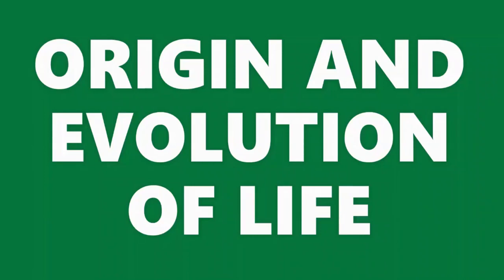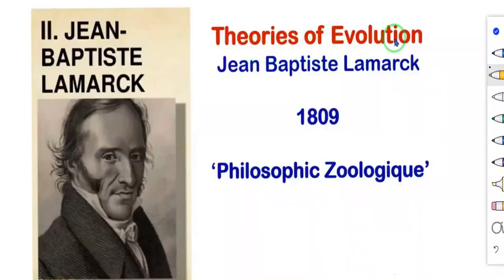Welcome back to zoology class. In the last video we covered the origin and evolution of life. Today we will see the remaining topics. First, let's understand what is evolution. Evolution is the gradual change occurring in living organisms over a period of time. Formation of new species due to changes in specific characters over several generations as a response to natural selection is called evolution. These natural changes are explained through the theories of evolution by Lamarck and Darwin.